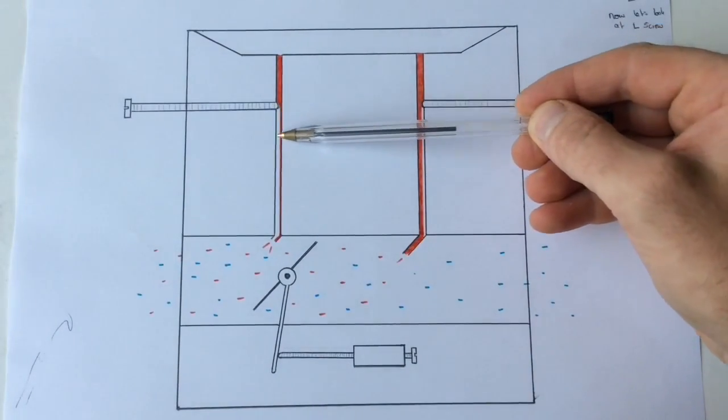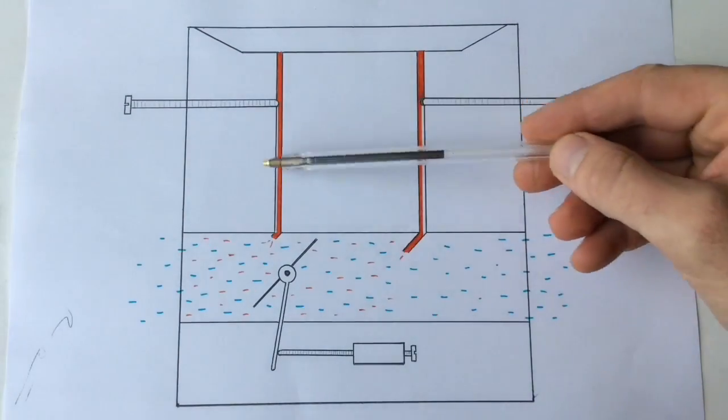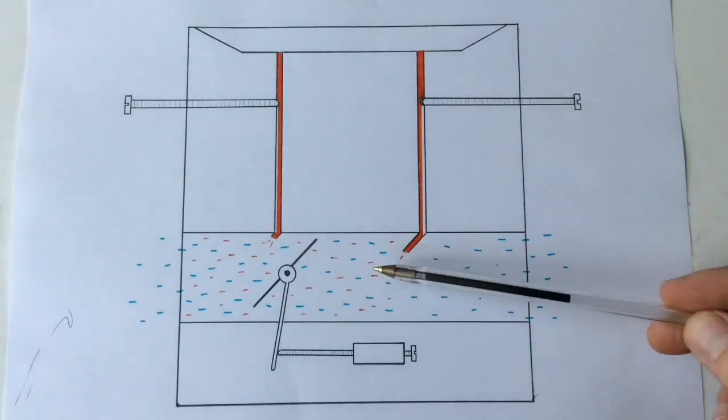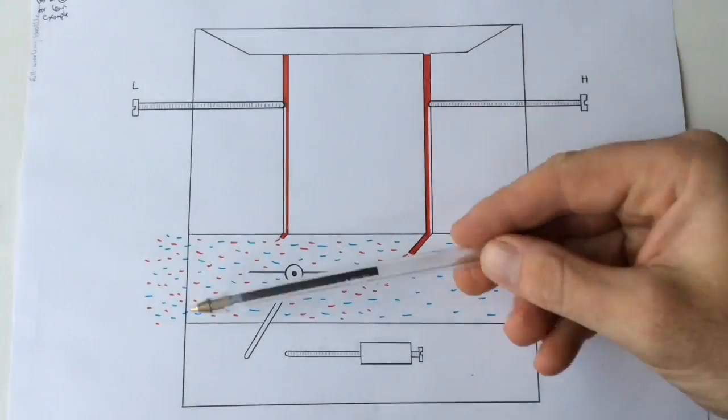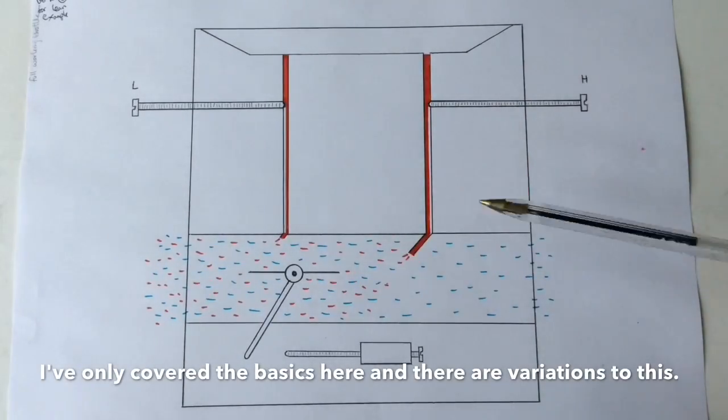So now screwing the low screw in even further, we can see we're getting to a really lean state. So going back now to an efficient right amount of air, the right amount of fuel. That's how it all works in theory. And this is the carburetor now working at its full capacity and working how it should.